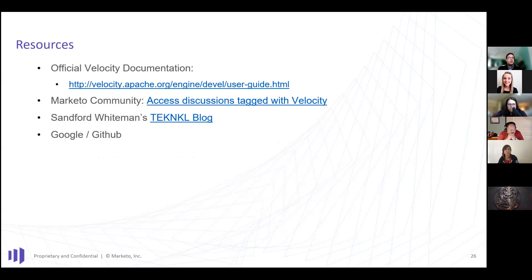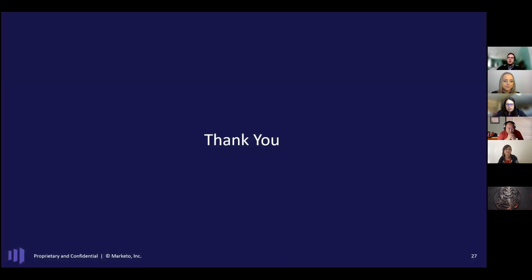Some resources: there's official Velocity documentation, though I don't find it super helpful. The Marketo community is a great place — search for anything tagged Velocity. Sanford Whiteman's blog is amazing — he's an absolute wizard from a Velocity standpoint. And Google and GitHub are real resources I find myself on regularly when trying to figure out stuff. Someone had a piece of code on Google for getting an email asset ID into a token and I just pasted it and it worked. Great resources out there!